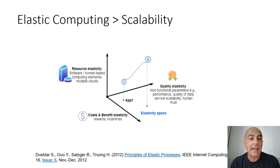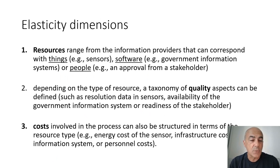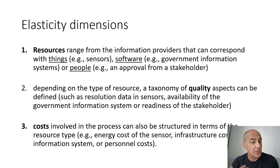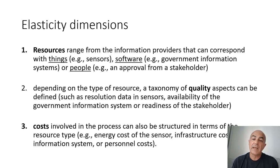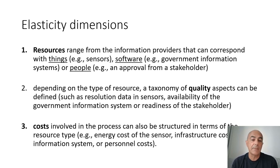We want to apply this idea of elasticity within this three-dimensional space to the domain of blockchain. The elasticity dimensions — resources, quality, and cost — are as follows. Resources range from information providers corresponding to things, for example sensor data or software services like a government information system, or even people such as an approval from a stakeholder. Depending on the type of resource, a taxonomy of quality aspects can be defined, such as the resolution of sensor data, the availability of government information, or the readiness of a stakeholder. Thirdly, costs involved can be structured in terms of resource types, for example the energy cost of a sensor, the infrastructure cost of an information system, or personnel cost.